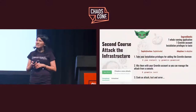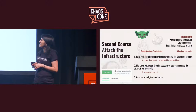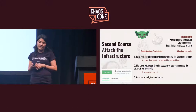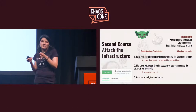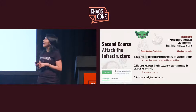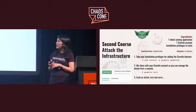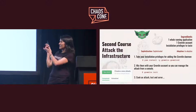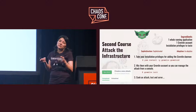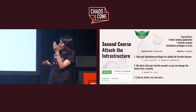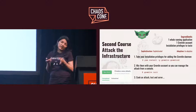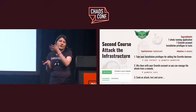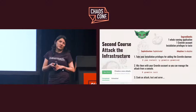My second recipe is for attacking the infrastructure. This recipe is classified as sophisticated and at an adoption level. The ingredients are a whole REST application running, one Gremlin account, and installation privileges. I'm using Gremlin and the Gremlin console. The first step is to take your application privileges for adding the Gremlin account — this command works perfectly if you are running your application with Amazon Linux. The second step is to mix them with the Gremlin account in order to have access to the Gremlin console, and this command works perfectly for that.